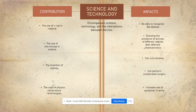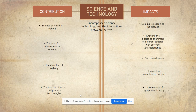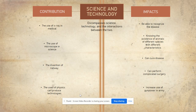The microscope is used to find small living things that cannot be seen by the naked eye. The invention of the railway provided convenience for the population, and the use of physics produced technologies such as telephones, circuit wires, and various other technologies. This combination gave many impacts, such as the ability to recognize diseases like the cholera epidemic, knowing the existence of many different animal species, being able to cure disease, perform complicated surgery, and increase the use of gunpowder in the army, giving advantages in battle.